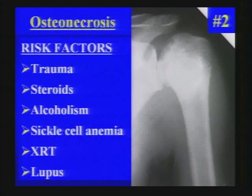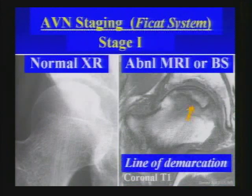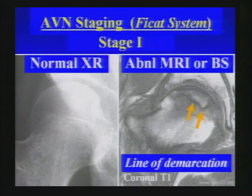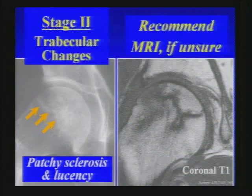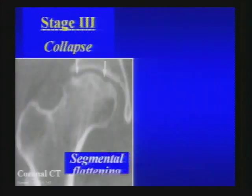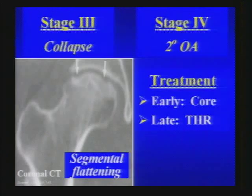Additional risk factors include hemoglobinopathies like sickle cell, radiation therapy, and lupus. The most common staging system used by orthopedists is the FICAT staging system. Stage one: normal x-ray with abnormal MRI or bone scan showing a line of demarcation between necrotic and viable bone. Stage two: subtle trabecular changes with patchy sclerosis. Stage three: segmental flattening or collapse. Stage four: premature secondary osteoarthritis. The staging impacts treatment — early stages get core decompression; stage four gets total joint replacement.